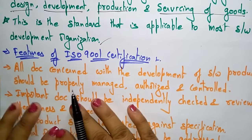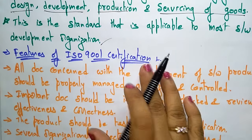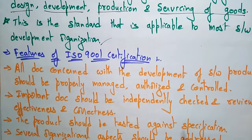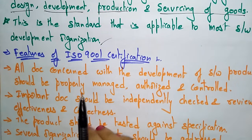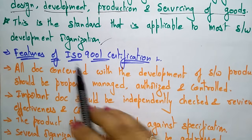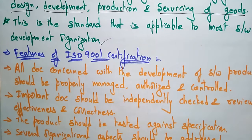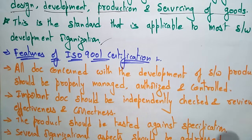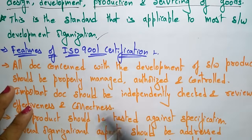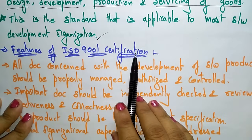Coming to the features present in the ISO 9001 certification: whatever organization you are working in, you have to check whether that organization has the certification. When that certification is given to any organization, it becomes one of the standards applicable in software development, meaning it is an achievement for that organization in the industry.